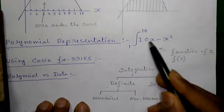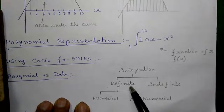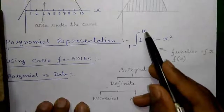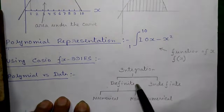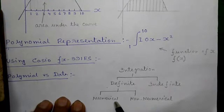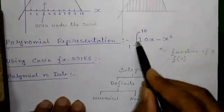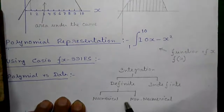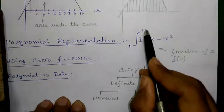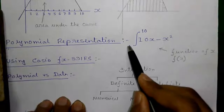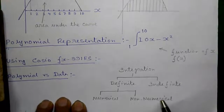A few more basics. This is called f(x) or function of x. Integration is of two types: number 1 is definite integral, where the lower and upper limits are given; number 2 is indefinite integral, where the lower and upper limits are not given. Definite integral is also of two types: numerical definite integral, where the upper and lower limits are numbers and the output gives a numerical value; and non-numerical definite integral, where the limits are not numbers but may be variables or constants like e or x, used for theoretical purposes.